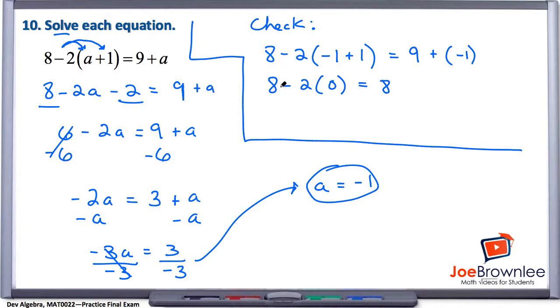And here on the left, 8 minus 2 times 0. Well, we know anything times 0 is 0, so this whole thing goes away. The only thing we're left with, then, is 8 equals 8.